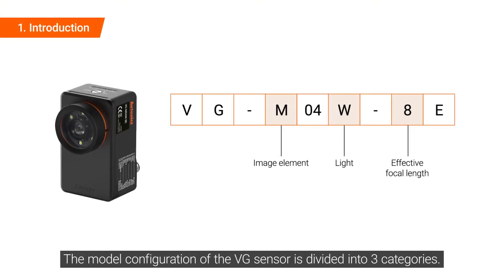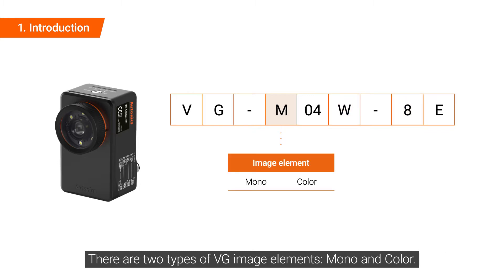The model configuration of the VG sensor is divided into three categories. There are two types of VG image elements: mono and color.